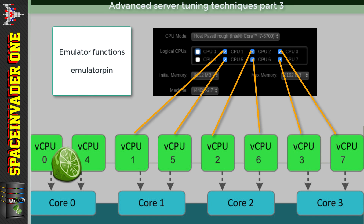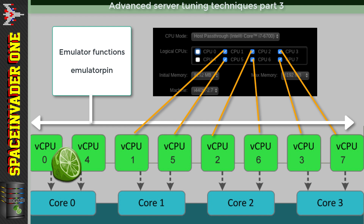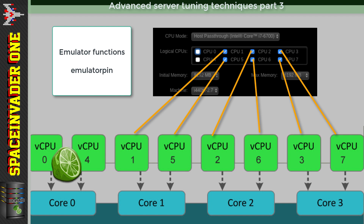If we don't pin the emulator functions, these processes are spread across all cores of the server. So if we're having latency problems, we can lock this process down and pin it to its own core - a core that we haven't pinned to the VM. This will keep the cores that the VM's operating system uses clean. In this example, we'll have the Windows VM pinned to three hyperthreaded cores, then pin the emulator function to the first core - the one Unraid prefers.